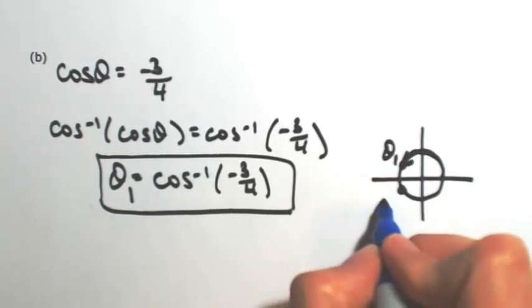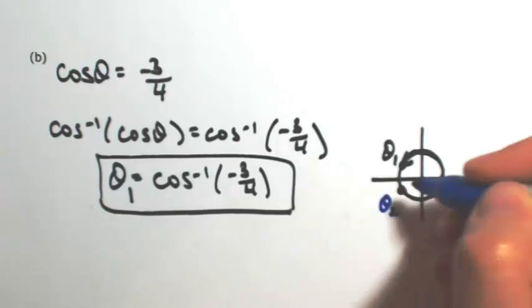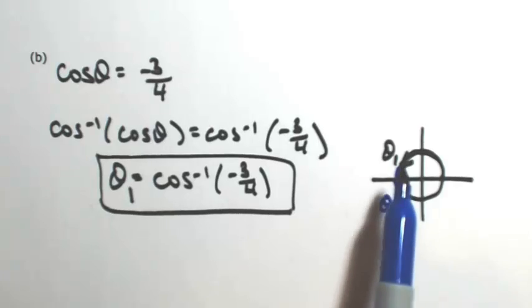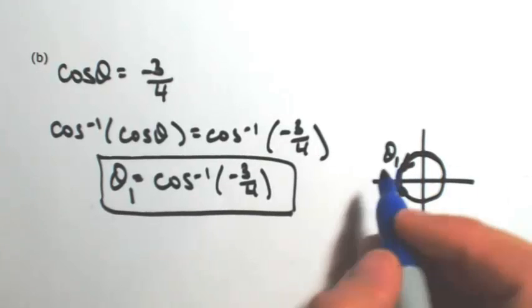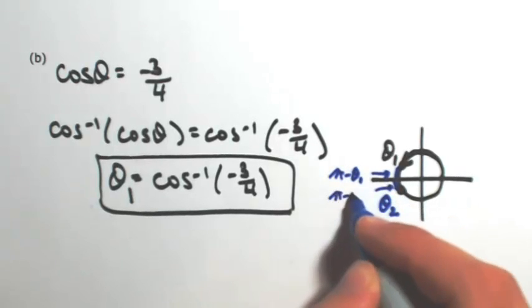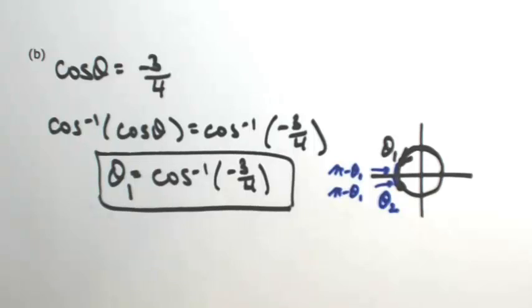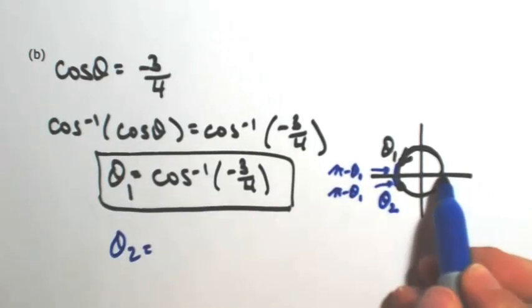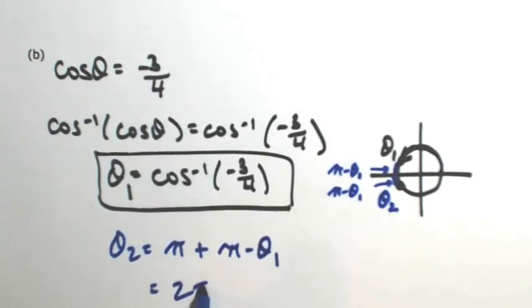So to find that second angle, I'm going to call that θ₂. I need to figure out what is that little bitty piece past π. Because those are going to match up. Well, if I want to figure out that little piece, I'm going to take π minus θ₁. So that means that other little bitty piece is also π minus θ₁. So to figure out what θ₂ is, first of all, it's just the entire top part there, so that's just π, and then plus this little bitty piece π minus θ₁. In other words, 2π minus θ₁.